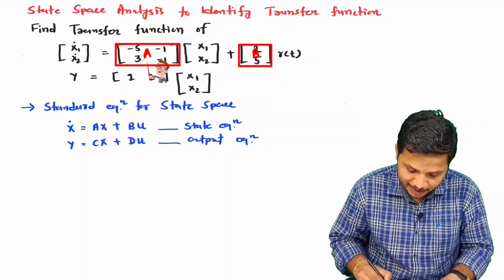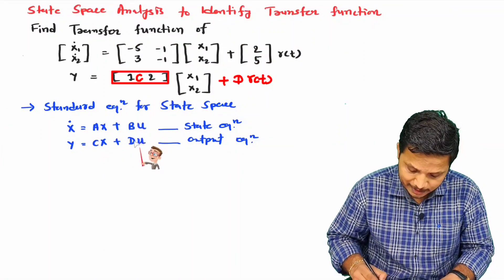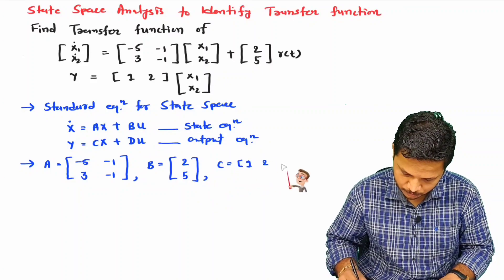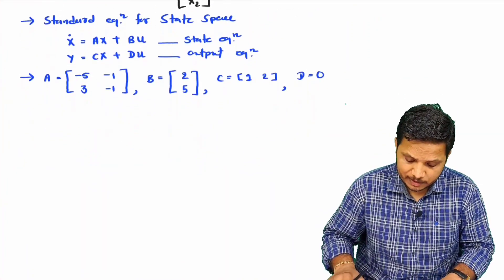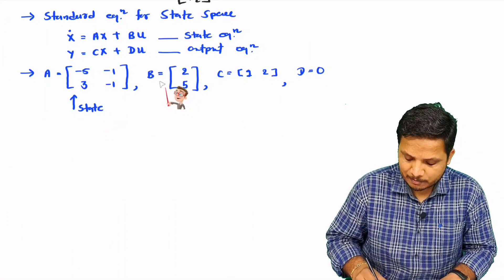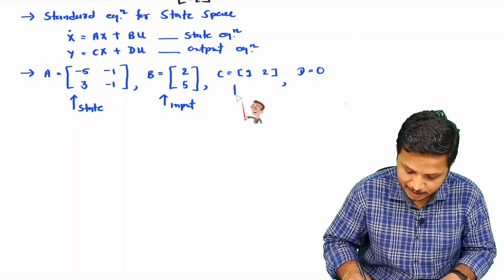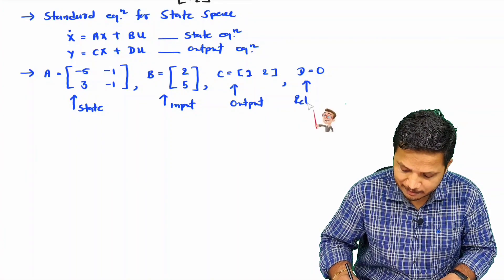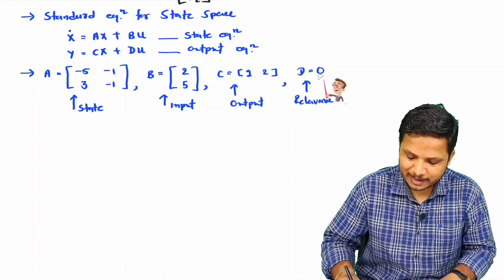So we will identify matrix A, B, C, and D — where D equals 0 in this case. Matrix A is the state matrix, matrix B is the input matrix, matrix C is the output matrix, and matrix D is the relevance matrix. Matrix D gives the direct relevance of output with input, and that is 0 in our case.